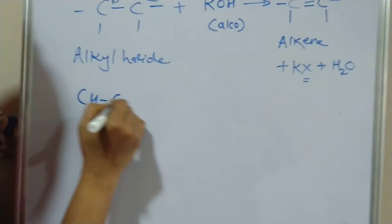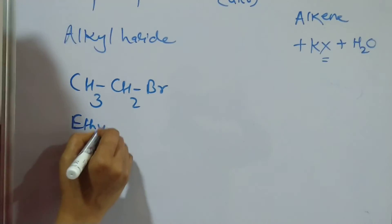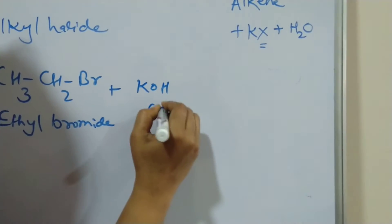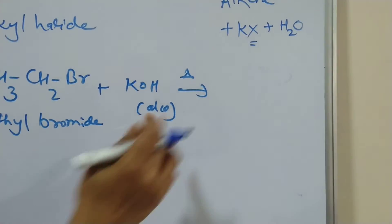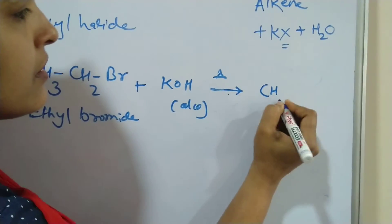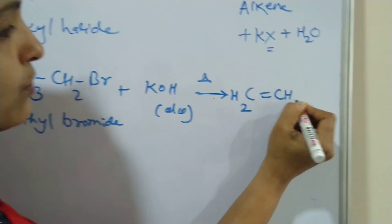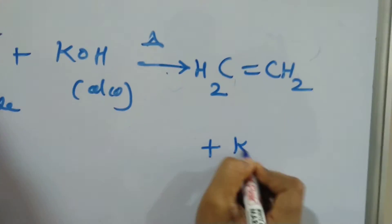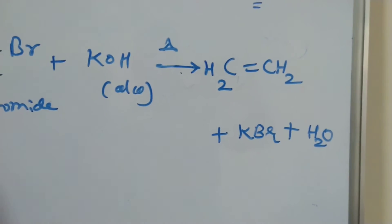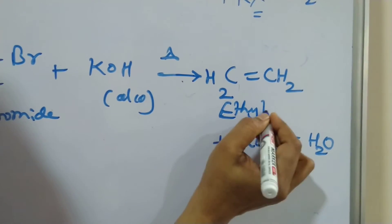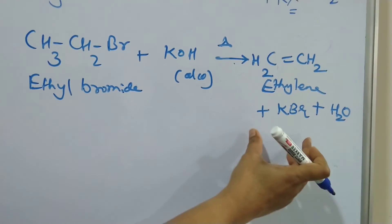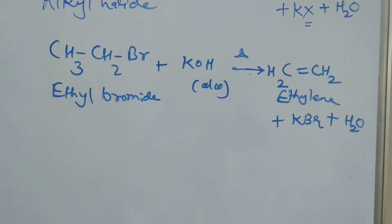Here I will take ethyl bromide as the alkyl halide example. Ethyl bromide reacts with alcoholic KOH. The reaction conditions include heat (triangle sign). There is a formation of alkene: CH2=CH2, and by-products are KBr plus H2O. The product is ethylene.